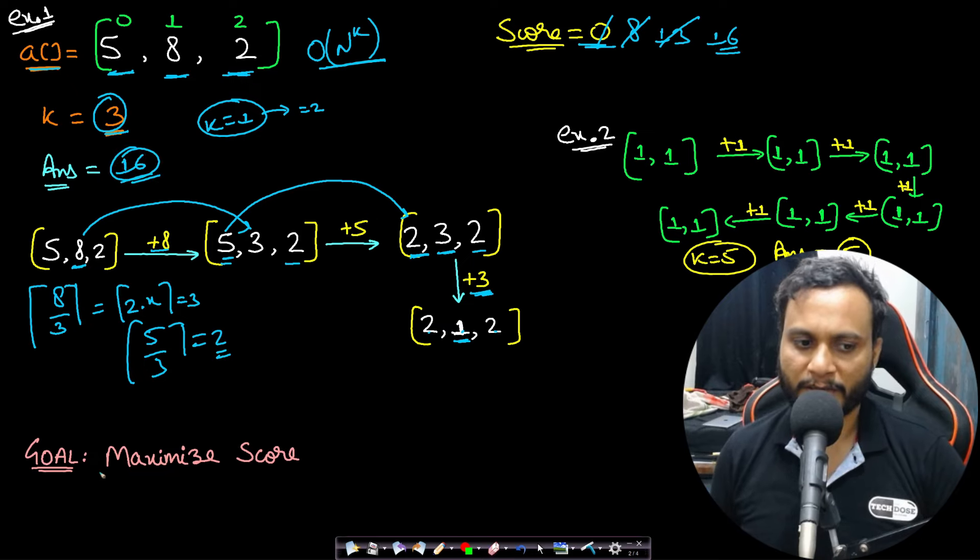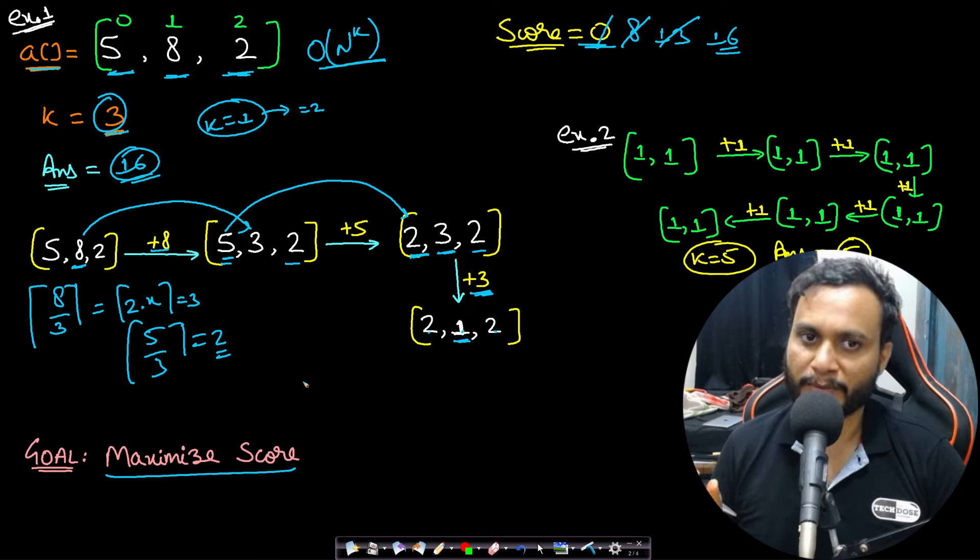Our goal here is to maximize the score. Whatever choices we make, we need to always find the maximal score possible so that there should not be any other combination or way of making choices which is giving me a better answer.